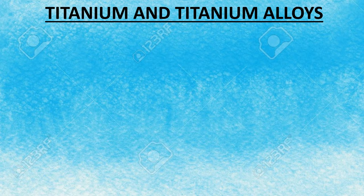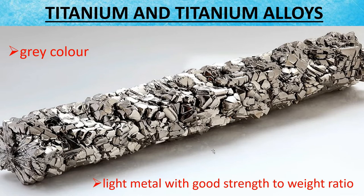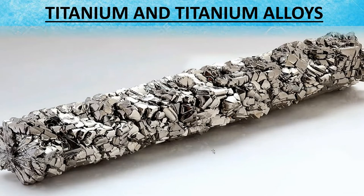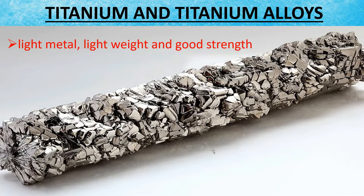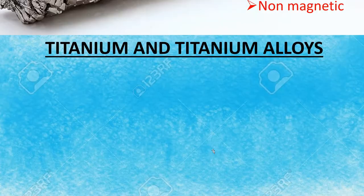Hello friends, today I'm going to give some details about titanium and titanium alloys. At room temperature, the color of titanium is gray. Titanium is a light metal with a better strength-to-weight ratio, meaning it is both lightweight and has good strength. Titanium metals are non-magnetic, which means titanium will not be attracted by an external magnetic field.